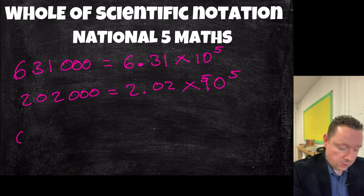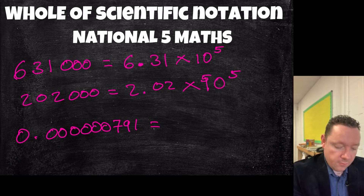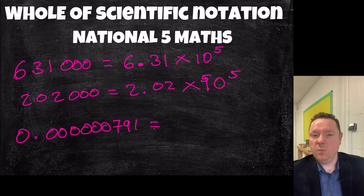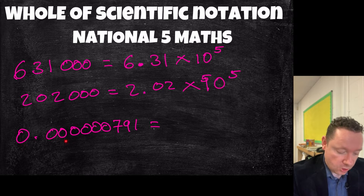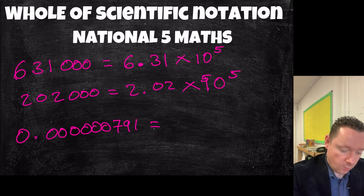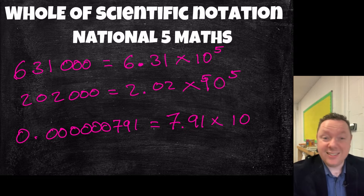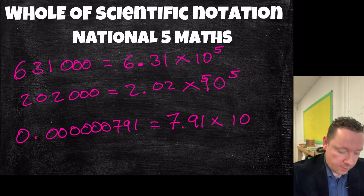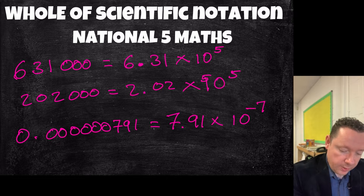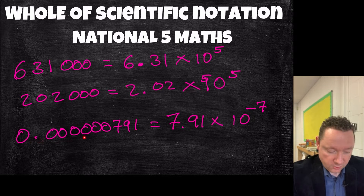Let's do a small number. For a small number like 0.0000079, this is where the power of scientific notation comes in. Instead of having to write that big number with all those zeros, I can skip ahead to the first number I reach and start there — 7 point the rest of the numbers. So it's 7.91 times 10 to the power of — now it's a negative power because it's a small number — and counting the jumps: 1, 2, 3, 4, 5, 6, 7 — so it's minus 7. A quick and easy way: just count all the zeros in front of the first number — however many there are gives you this power.